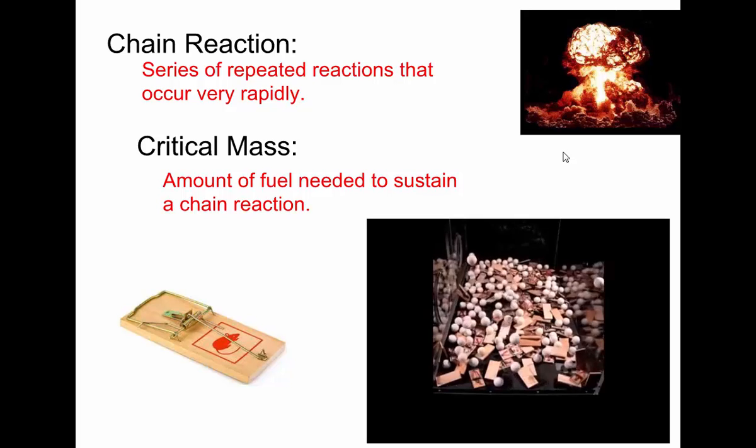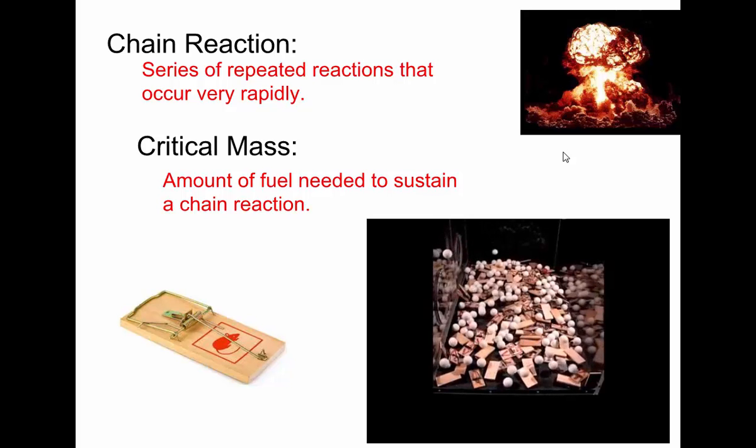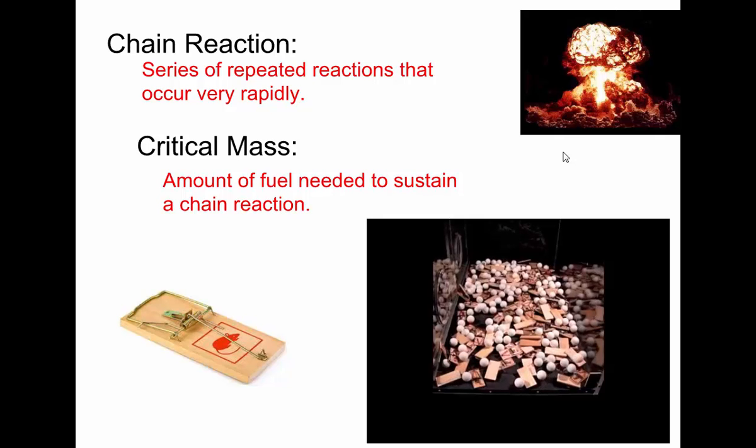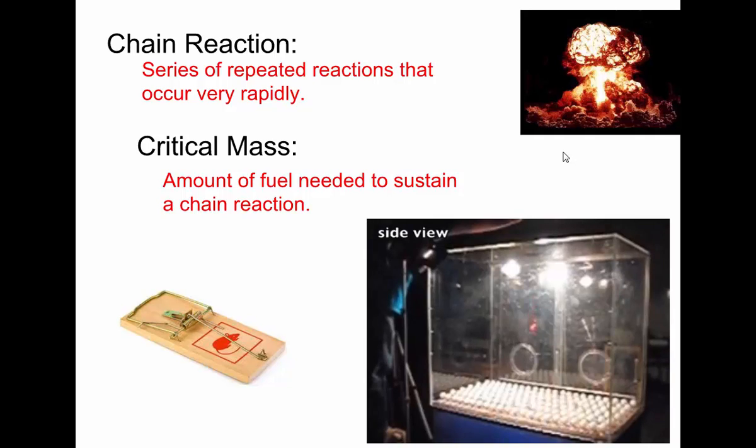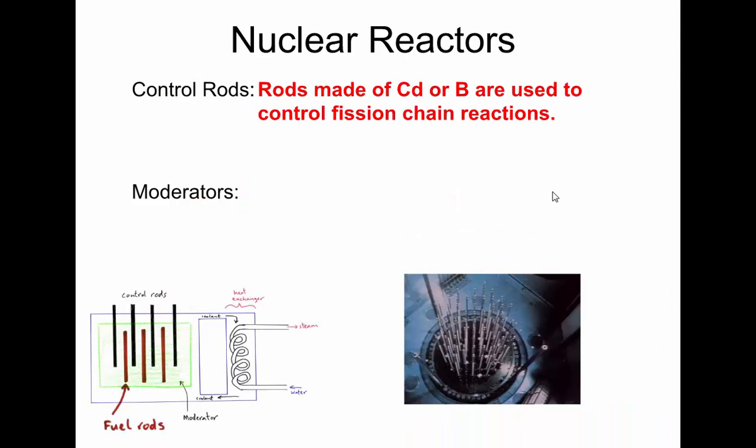Now if you have a chain reaction and a critical mass of fuel and it's allowed to proceed like this in an uncontrolled way, you can end up with something like this, which is a nuclear explosion. Or, if it's controlled, it can be harnessed to make energy. So we'll talk about both of those things.